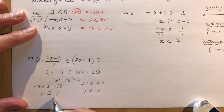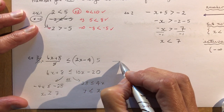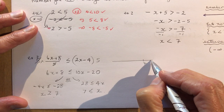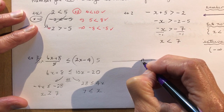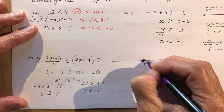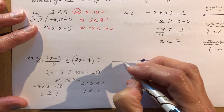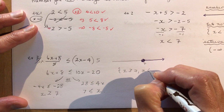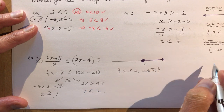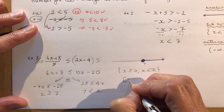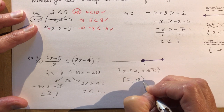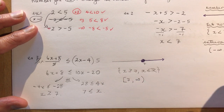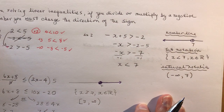So x is greater than or equal to 7. On the number line, place 7 with a filled circle and draw the line to the right. In set notation: {x | x ≥ 7, x ∈ ℝ}. In interval notation: [7, ∞) — square bracket on 7 because the endpoint is included, round bracket on infinity. That's the three types of notation again.